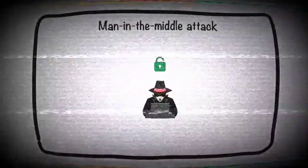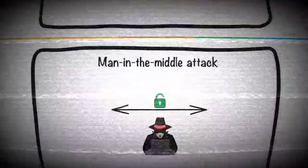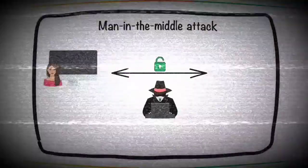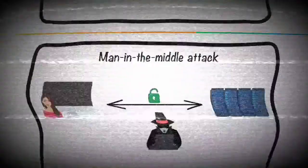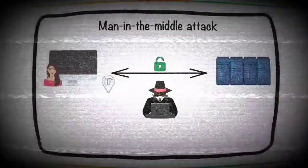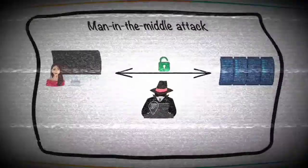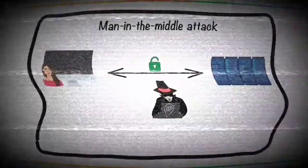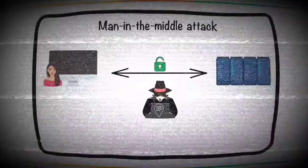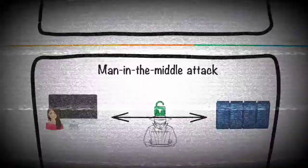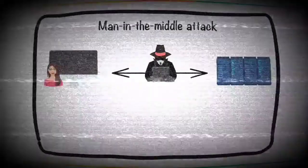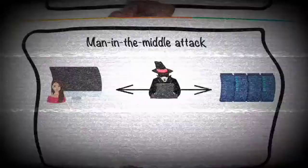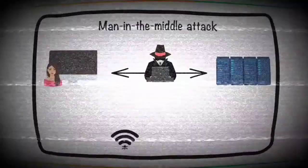You can exploit the security of a WiFi network. This is a major technique hackers use — they intercept the communication system, and the server is able to collect the details of the communication. This is a man-in-the-middle attack.